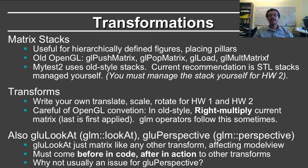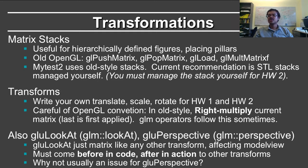Of course, in old style OpenGL, commands are provided for these purposes like glScale, glRotate, glTranslate, and there are equivalent glm commands, but you are supposed to write it yourself in homework 1 and 2. Be careful of OpenGL conventions. In the old style, you right-multiply the current matrix, and this leads to a difference in code where the last transformation in the code is actually the first one that's applied. And glm operators largely follow this convention. But this is a bit different from the standard mathematical convention and leads to column versus row order, so you have to be careful.